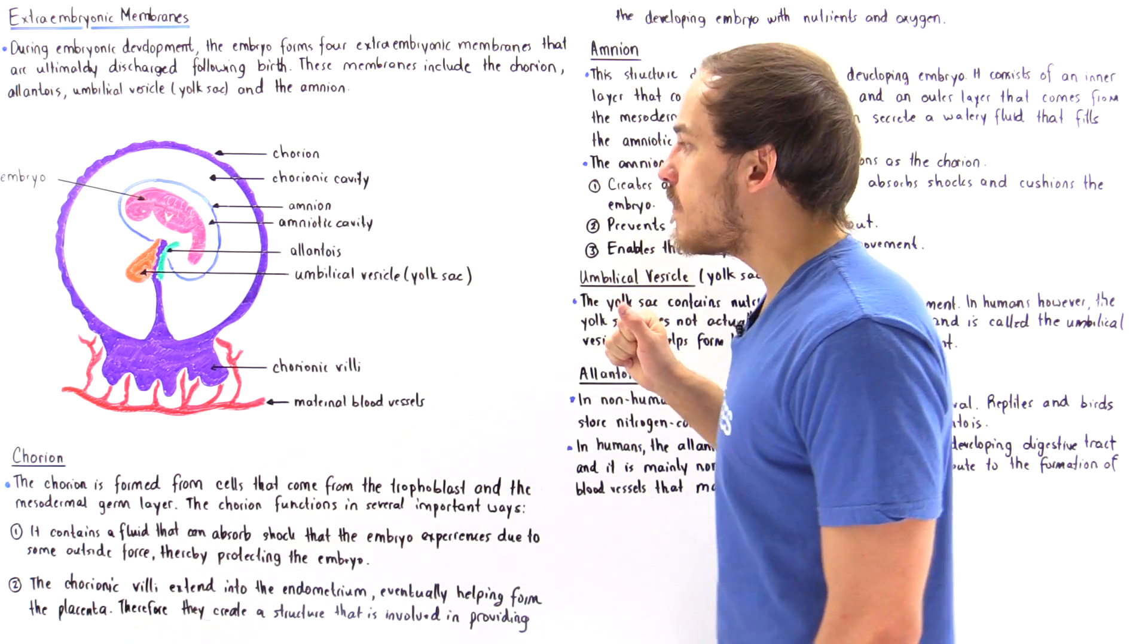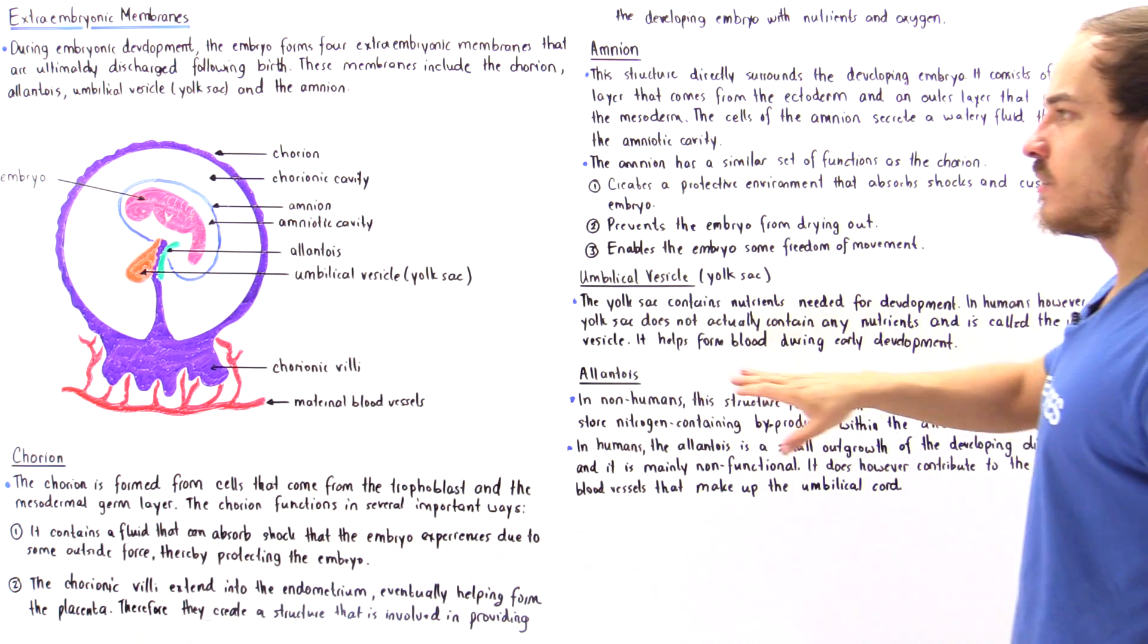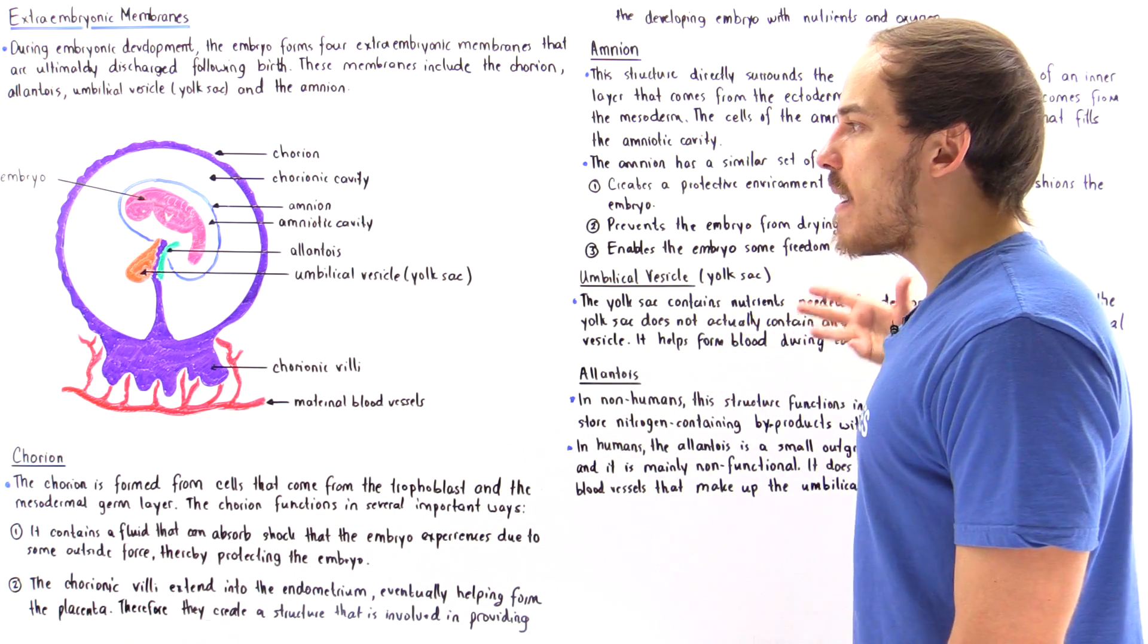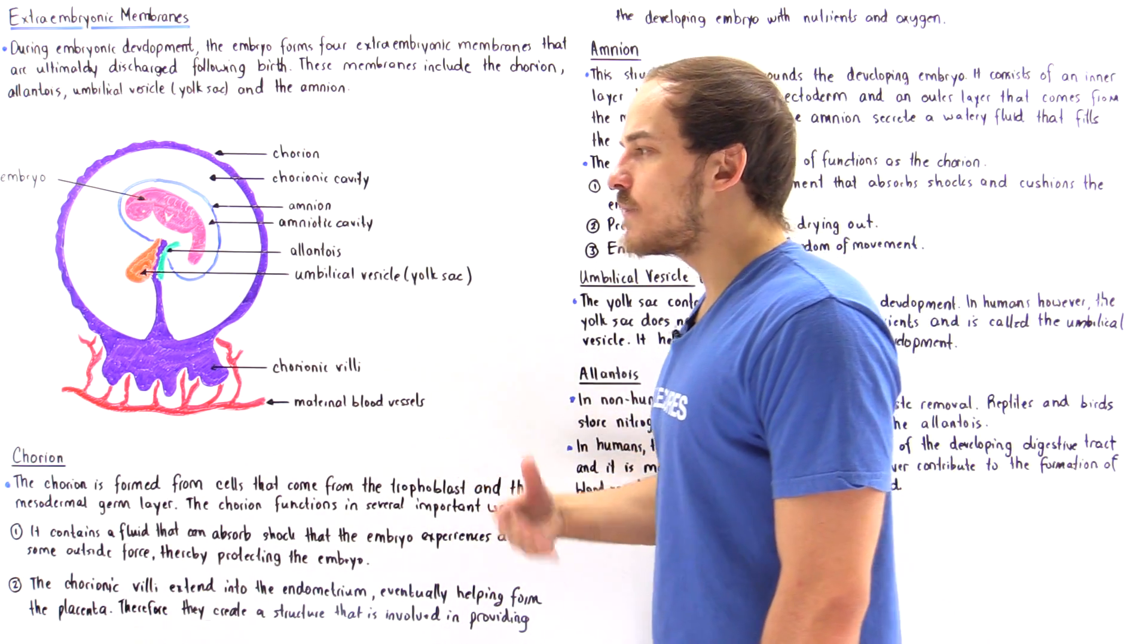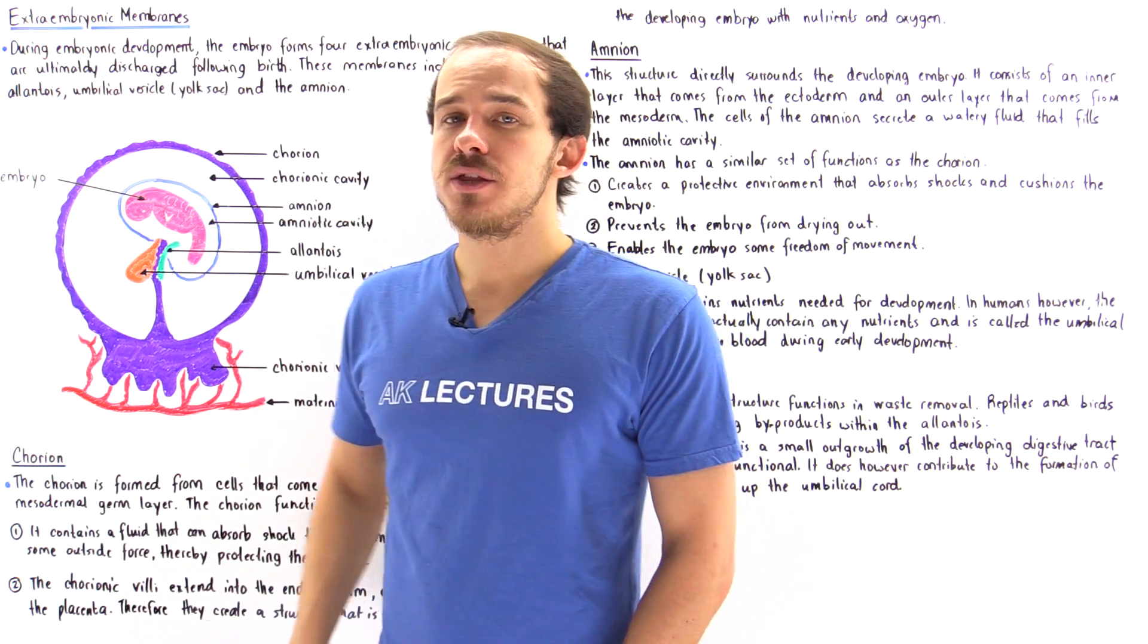So these are the four extra embryonic membranes: the chorion, the amnion, the umbilical vesicle and the allantois. And these four membranes are eventually discarded following the birth of that individual, in this case, the human being.